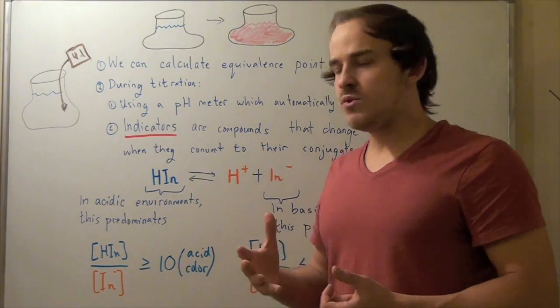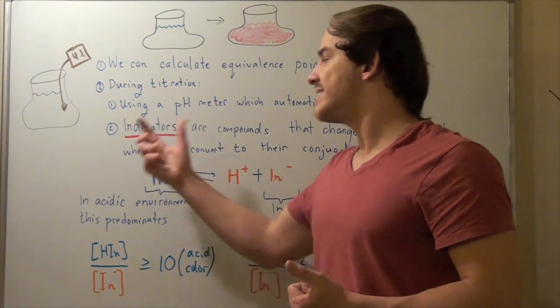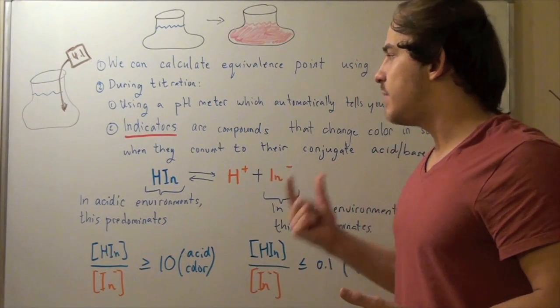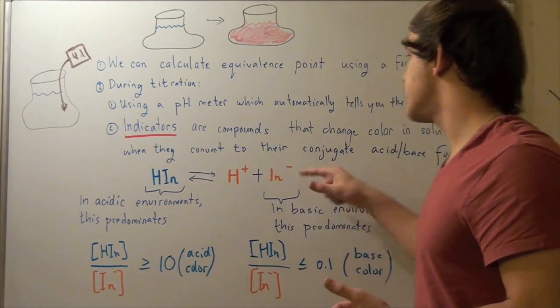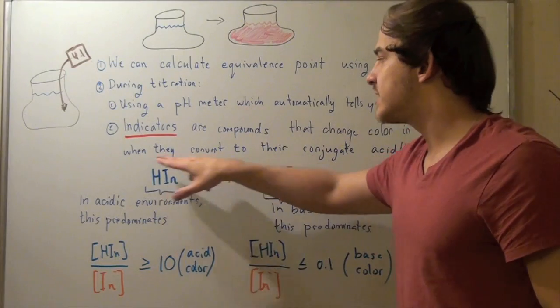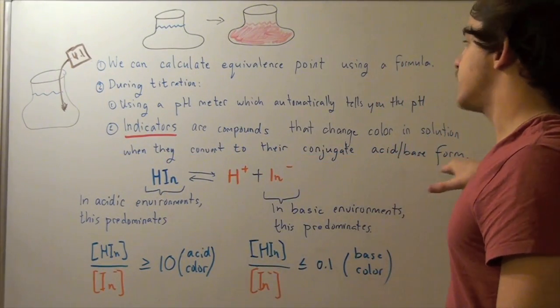The second thing you need to use is called an acid-base indicator. Acid-base indicators are compounds that change color in solution when they convert to their conjugate acid-base form.